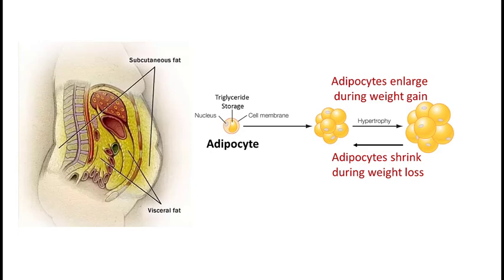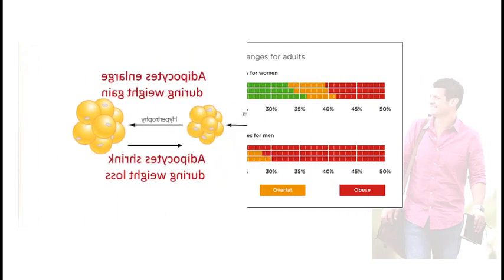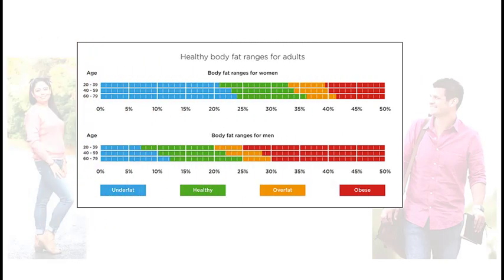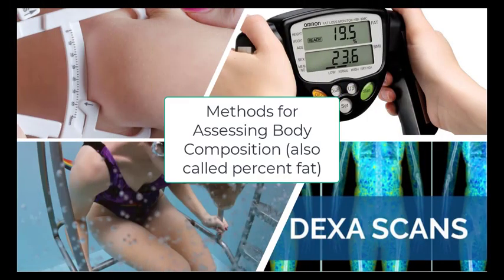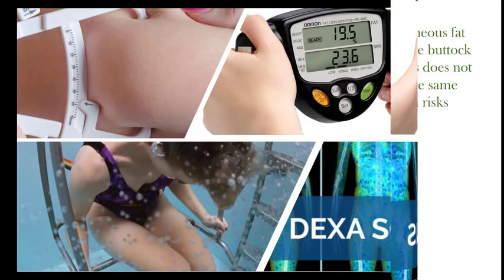For health considerations, how much body fat we have and where it's located both matter. For good health, men should have 10–20% body fat and women should have 16–26% body fat. A body composition assessment can help us determine the percent of our weight that's fat tissue versus the percent that's lean tissue. There are many methods described in your book for making those assessments, including hydrostatic weighing, skin fold tests, the DEXA, and bioelectrical impedance.